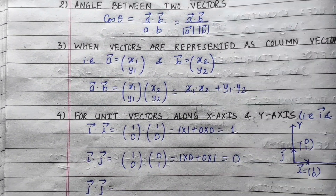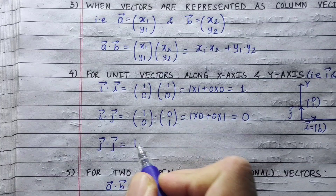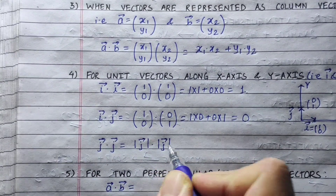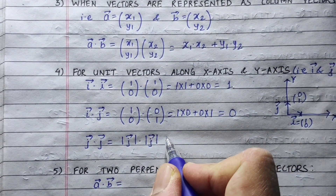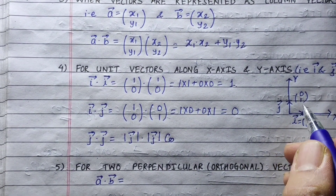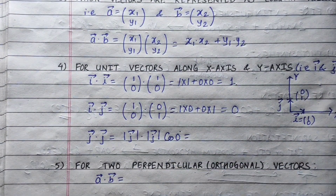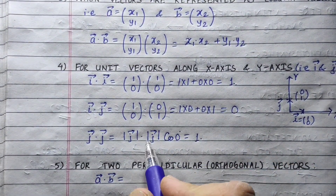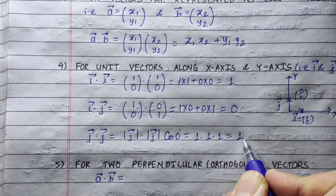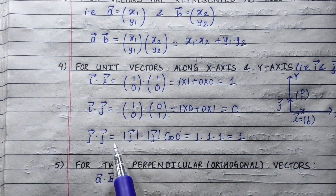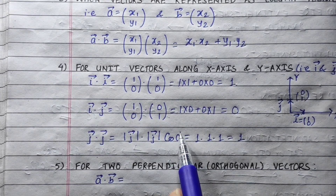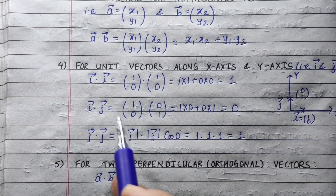Using the dot product definition — magnitude times magnitude times cos of angle between them — for j dot j: they are the same vector, so the angle is 0 degrees. The magnitude is 1 and cos 0 equals 1, so j·j equals 1. Similarly, i·i equals 1, and i·j equals 0 since the angle between them is 90 degrees.